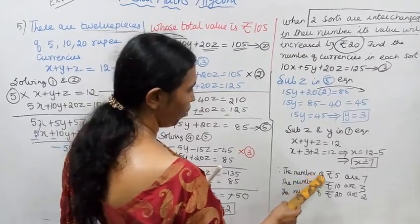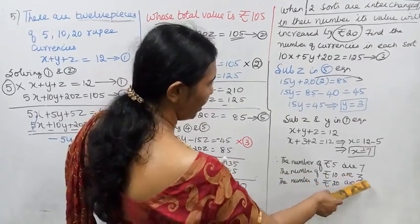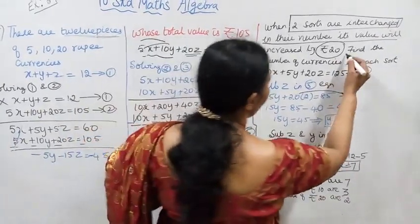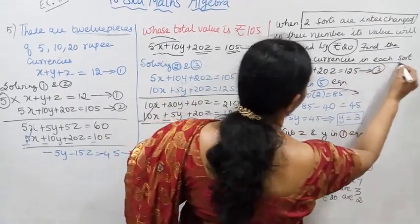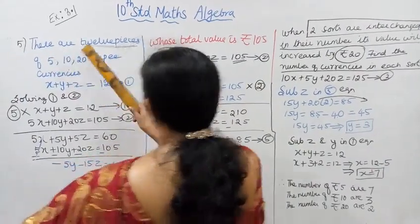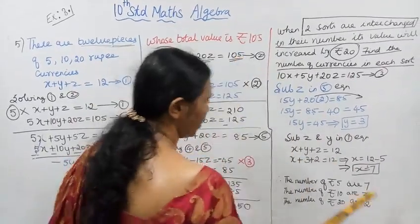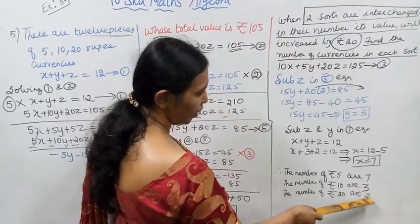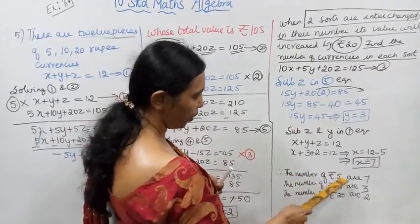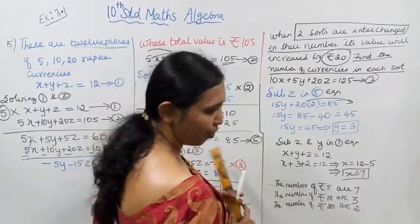The number of 5 rupee currency is 7, the number of 10 rupee currency is 3, and the number of 20 rupee currency is 2. Verification: there are 12 pieces total — 7 plus 3 is 10, 10 plus 2 is 12. The number of currencies in each sort is confirmed.